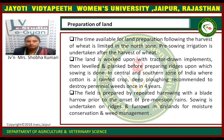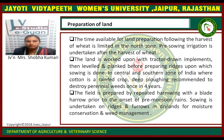Preparation of land. The time available for land preparation following the harvest of wheat is limited in the north zone. Pre-sowing irrigation is undertaken after the harvest of wheat. The land is ploughed using tractor-run implements, then leveled and planked before preparing the ridges upon which sowing is done. In the central and southern zones where cotton is a rainfed crop, deep ploughing is recommended to destroy perennial weeds once in four years. The field is prepared by repeated harrowing with the blade harrow prior to the onset of pre-monsoon rains. Sowing is undertaken on ridges and furrows in dryland for moisture conservation and weed management.